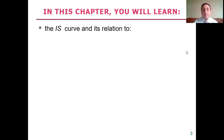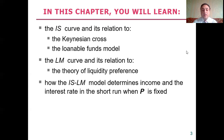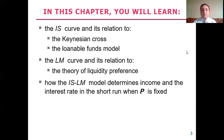In this chapter, we will learn the IS curve and its relation to the Keynesian cross and the loanable funds model, and also the LM curve and its relation to the theory of liquidity preference. We will see how the IS-LM model determines income and the interest rate in the short run when the price level is fixed.